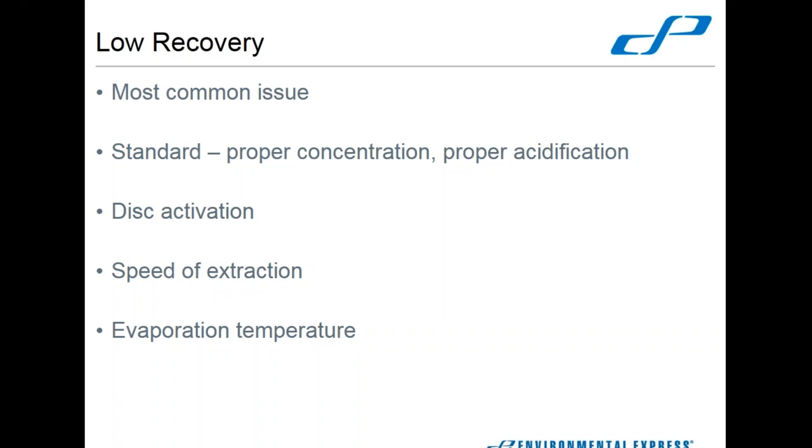Also, the evaporation temperature can play a role in your recovery. The method says up to 70 degrees—1664B says up to 70 degrees. We have discovered that lower evaporation temperatures, around 35 degrees actually, help out in preserving your standard recovery. Being able to evaporate at a lower temperature will help to prevent—I believe it's the hexadecane that can be lost in using high temperatures.